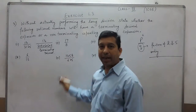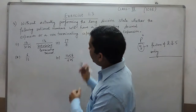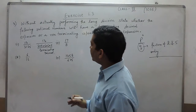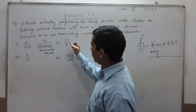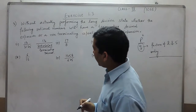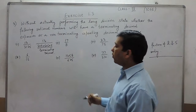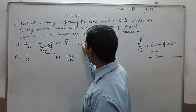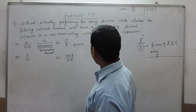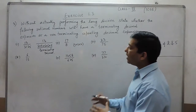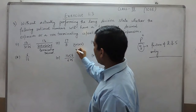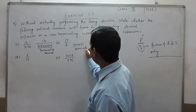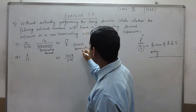Now the second question: it is 17 upon 8. We are already clear that they cannot be cancelled out, and the factors of the denominator 8 are 2 × 2 × 2. Again, the denominator has only 2s, so this is also a terminating decimal.